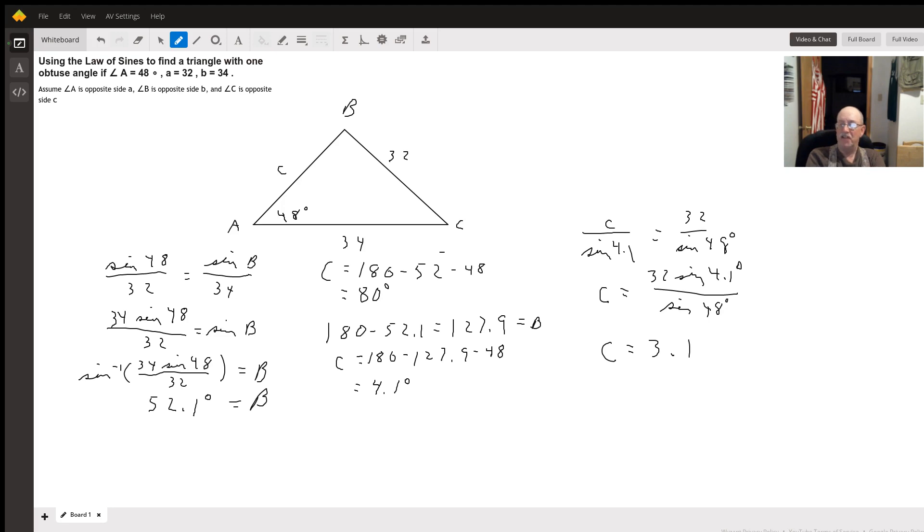Well, that doesn't give us an obtuse triangle or an obtuse angle. So we need to figure out the obtuse angle. We have to figure out if B is an obtuse angle. So we take 180 minus 52.1, we get 127.9. That's going to be what angle B measures in this case.